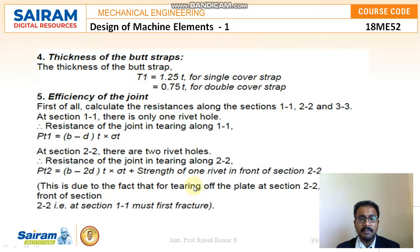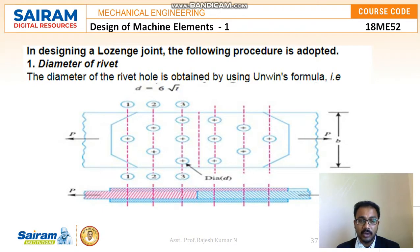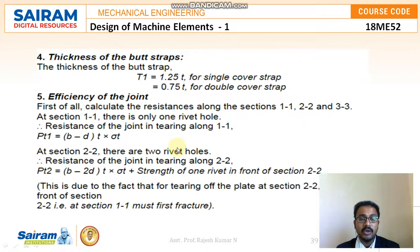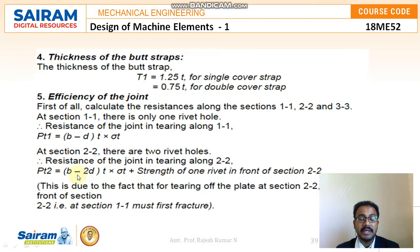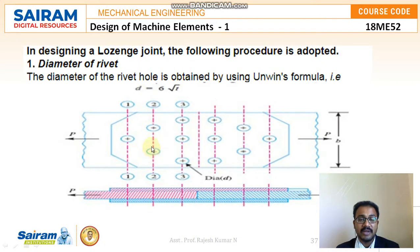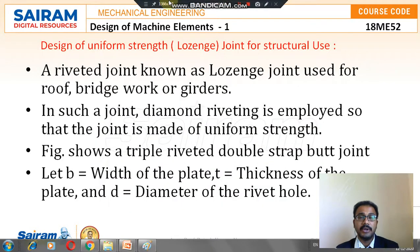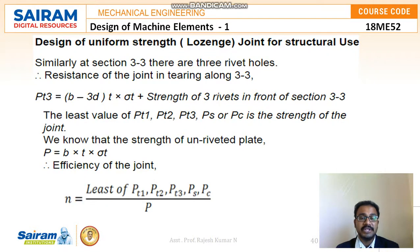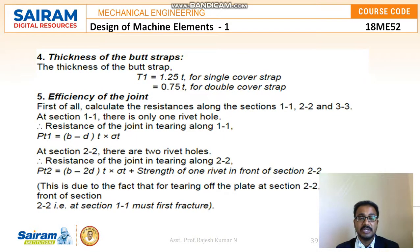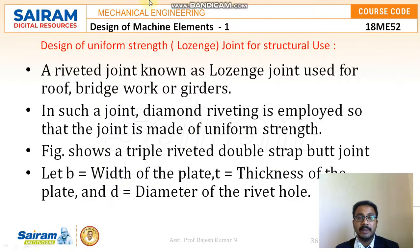This design procedure is not limited to three rows — it can be applicable for four, five, or six rows as well, still referring to the butt joint between plates. The number of rivets in each row will vary accordingly, and the formula adjusts based on the number of rivet holes. This is a very important design procedure from an exam point of view, and the same procedure is followed with only a few formula changes based on the given problem conditions. Thank you.